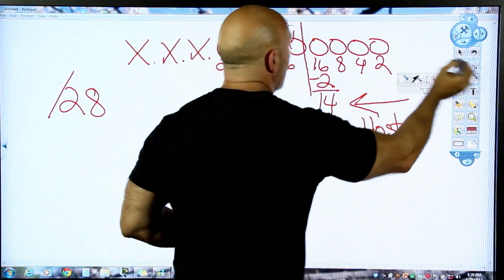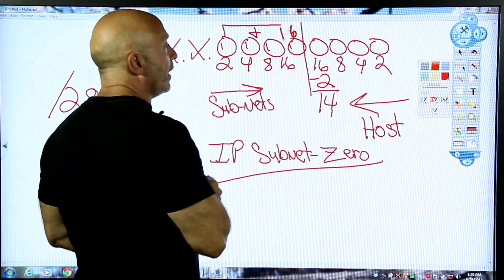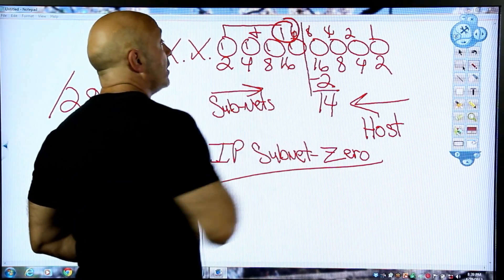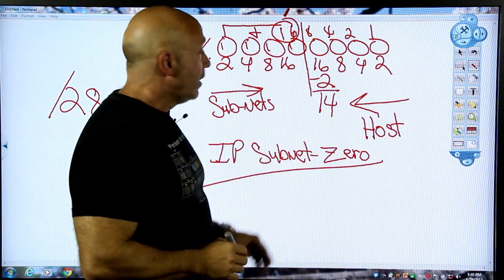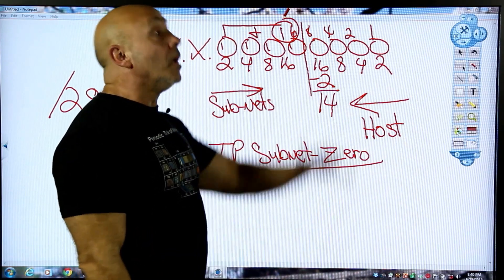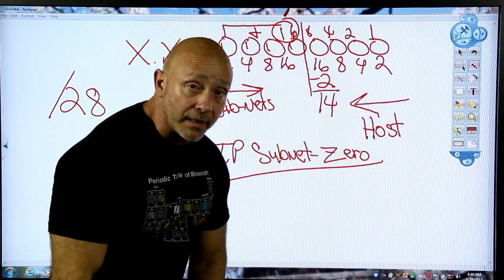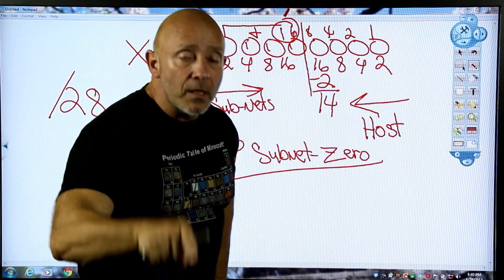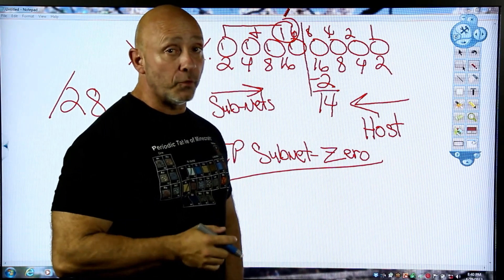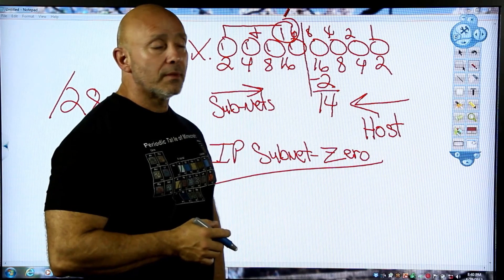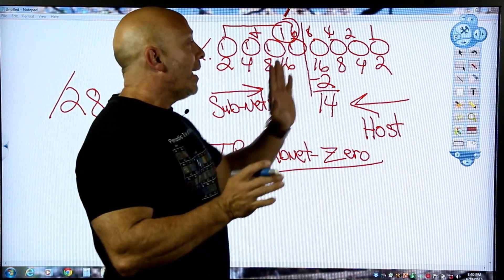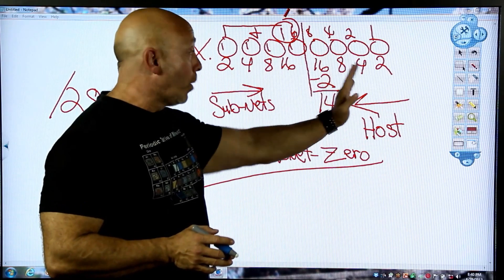Your increment here is 16. Why? One, two, four, eight, sixteen — that's the bit value to the left of the line, and that's your increment. If you're using the zero network, start your incrementation at zero: 0, 16, 32, 48, all the way down to 240. If you do NOT use the zero network, start at 16 and stop before 240. That's the difference.